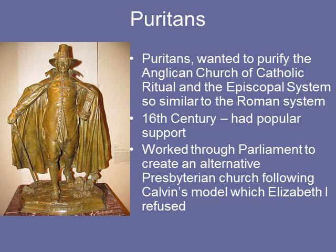Puritans wanted to purify the Anglican Church of Catholic ritual, and they wanted to get rid of the episcopal system — the bishoprics — so similar to the Roman system. In the 16th century they had a lot of populist support, and they worked through Parliament to create an alternative Presbyterian Church following Calvin's model. But Elizabeth I refused to do this — she wanted to maintain a centralized church where she had control.